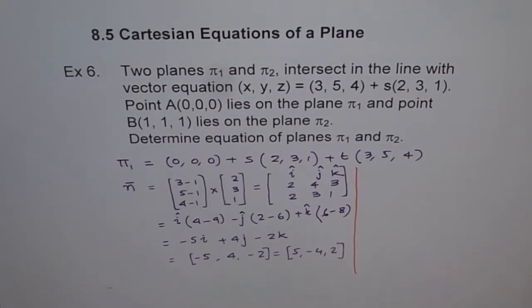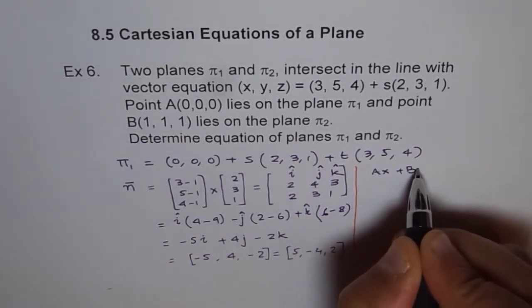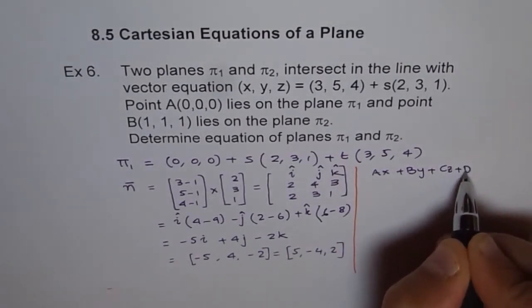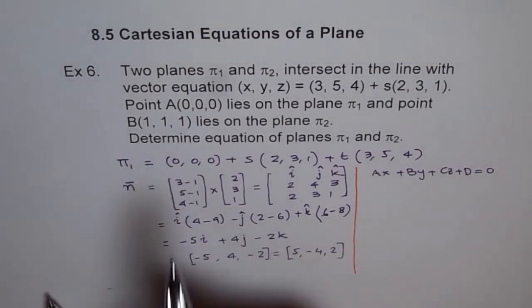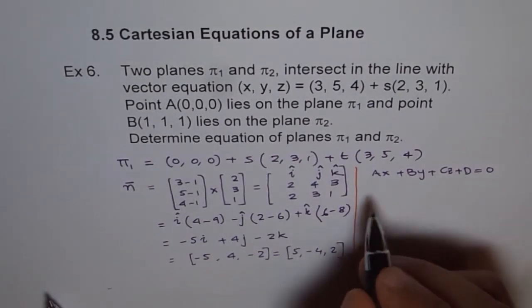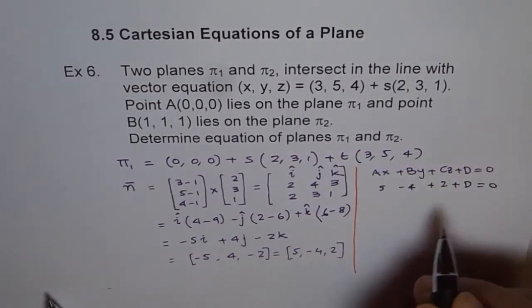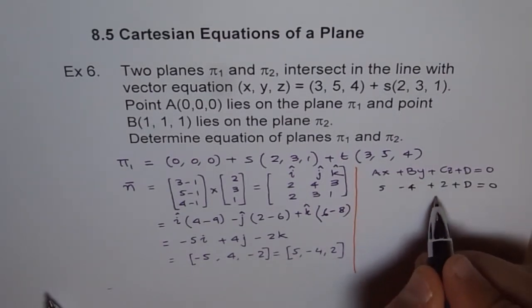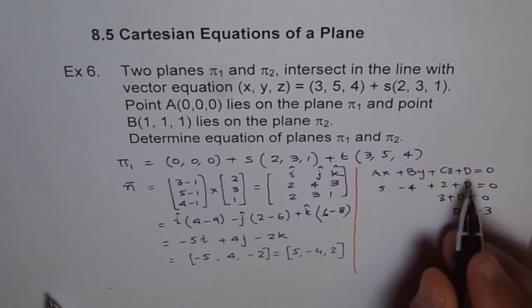As you can see, writing Cartesian equation in this situation takes a lot of time. Normally, the equation will be Ax + By + Cz + D equals 0, where A, B, and C are 5, -4, and 2. And x, y, z are the points (1,1,1). So we can find the value of D: 5(1) - 4(1) + 2(1) + D equals 0. 5-4+2 is 3, so D equals -3.